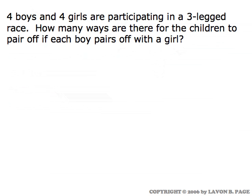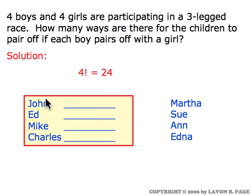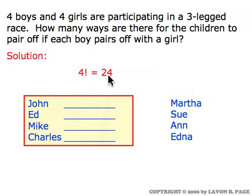Four boys and four girls are participating in a three-legged race. How many ways are there for the children to pair off if each boy pairs off with a girl? Think about making a list with the four boys' names, and in each blank put the name of the girl paired with that boy. Logically, that's equivalent to simply taking the four girls' names and putting them into an ordered list — that's a permutations question. Four factorial is twenty-four, so this is a pure permutations question.